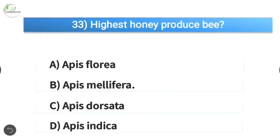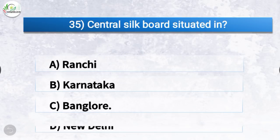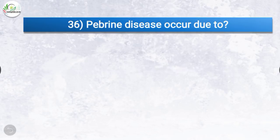Question number 34: Proboscis is found in? The correct answer is option D, honey bee. Proboscis is found in honey bee. Question number 35: Central silk board is situated in? The correct answer is option C, Bangalore. Central silk board is situated in Bangalore.